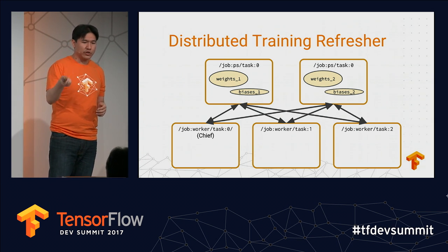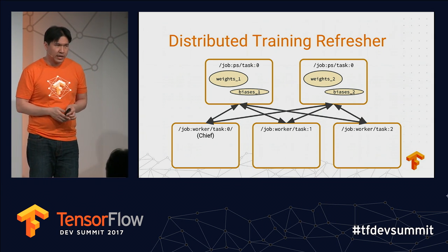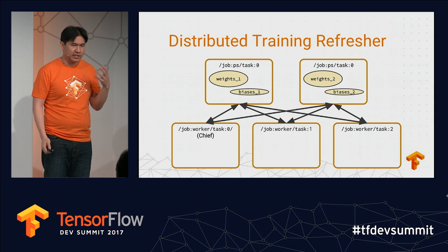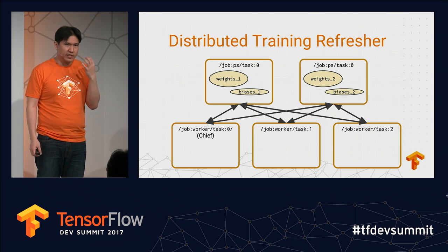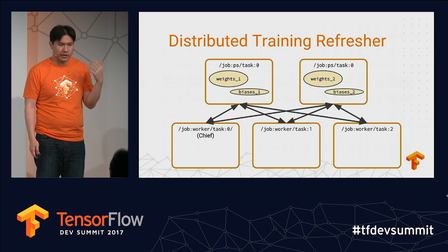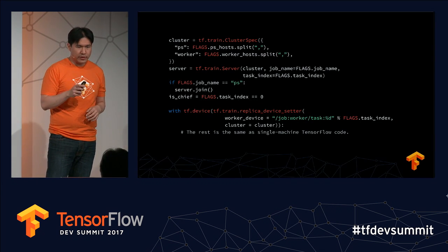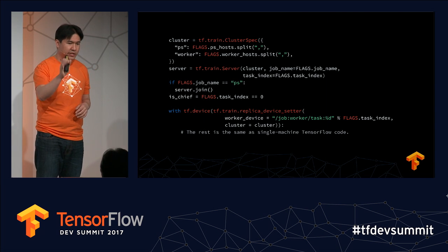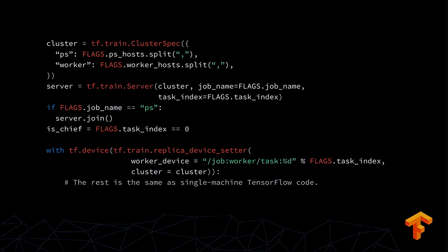There are essentially two types of jobs: parameter servers and workers. The most common setup, and the setup we recommend, is between-graph replication. In that case, workers operate completely independently — they don't necessarily talk to each other or even know about each other. They only communicate with the parameter servers. This is the code involved if you're using core TensorFlow. With the higher-level APIs, a lot of this goes away and becomes much fewer lines of code.